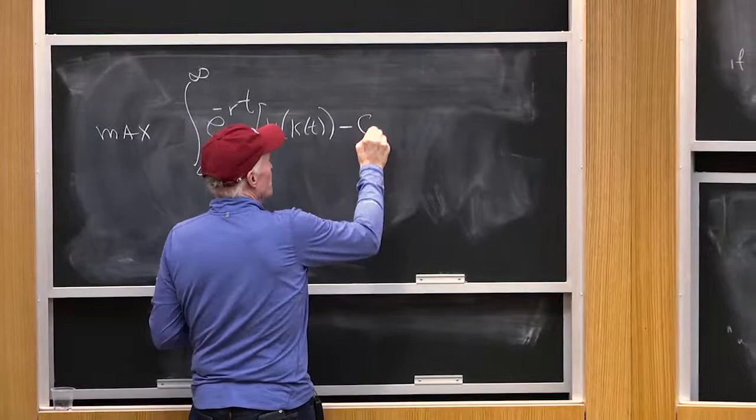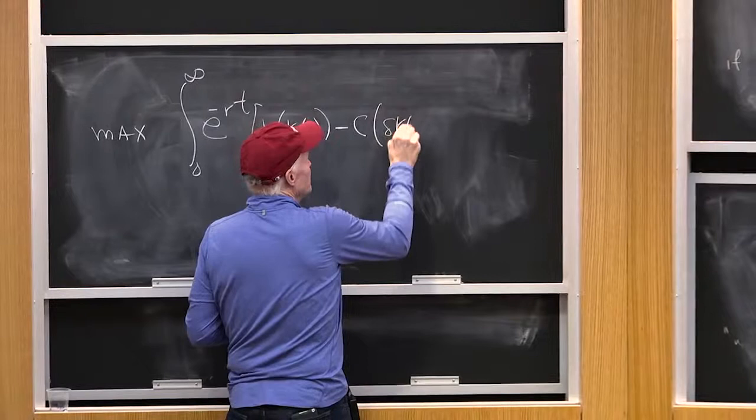What is i equal to? What is the amount of investment? Well, that's delta k of t plus k dot of t.